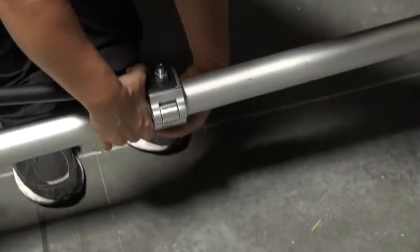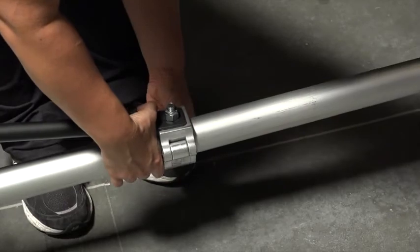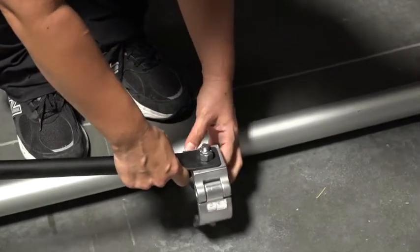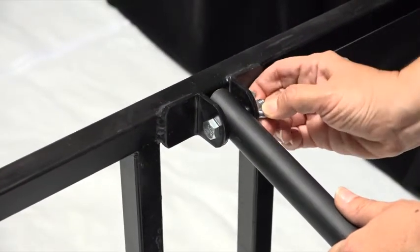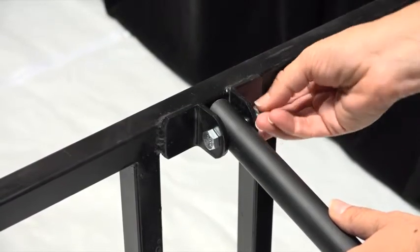The second step is to undo the wing nut from the mechanism, the cheese bro. This releases the pipe. The third step is to release the wing nut from the base of the back support.